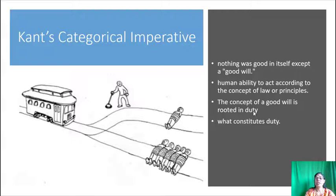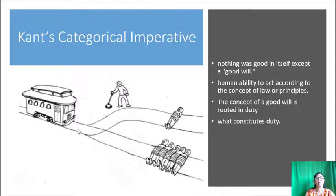The critical issue in following Kant's logic lies in what constitutes the duty. You can see in this picture: a train is passing. On the straight way five people are here, and on the other track one person is lying. Where should the train go? If it passes one way, one person will die; if it passes the other way, five people will die. In this situation, what is the right option?